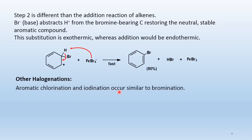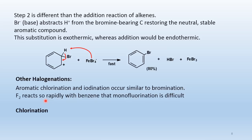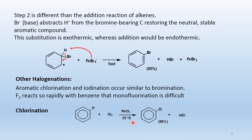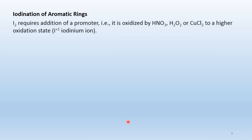Other halogenations are possible. Aromatic chlorination works similarly to bromination: adding Cl2 with FeCl3 catalyst at room temperature. Fluorine reacts so rapidly with benzene that monofluorination is difficult. For iodination, FeI3 does not work well because the electronegativity difference between iron (1.7) and iodine (2.5) is small, so it doesn't polarize iodine sufficiently. Instead, iodine must be oxidized to the iodonium ion (I⁺) using nitric acid, peroxide, or copper(II) chloride.